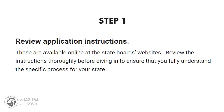The general process for applying for your PE license in most states is as follows. Step one: review application instructions. Instructions are available online at the state board's websites. Review the instructions thoroughly before diving in to ensure that you fully understand the specific process for your state.